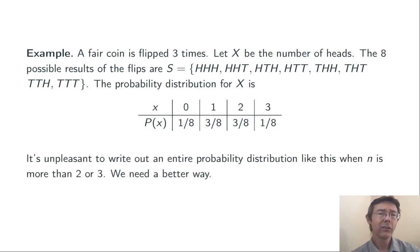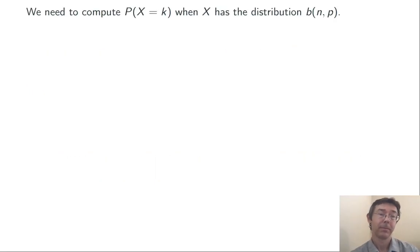So when n starts to get larger, bigger than two or three, this becomes a real pain to do by hand. We'd like to have a more general way that will save us some work. So we want to compute the probability that X is equal to any k when X has the distribution b(n, p). Here we expect k to be somewhere between zero and n inclusive.